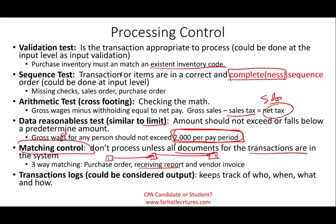We could also have something called a transaction log control — this could be considered processing or output, and I'll discuss it a bit more in the output controls session. The system keeps track of who, when, what, and how: it tells you who processed the transaction, at what time, how they did it, which accounts were involved, and so on. This is what's called a transaction log. Although it shows you what happened during processing, you look at it after the fact — whether you consider it processing or output doesn't matter; you need to know exactly what it is.